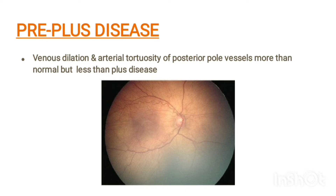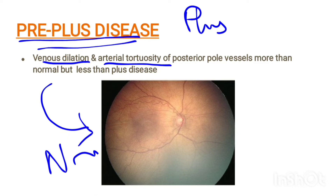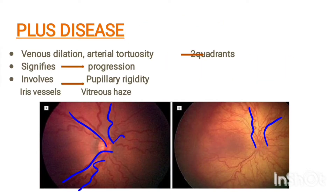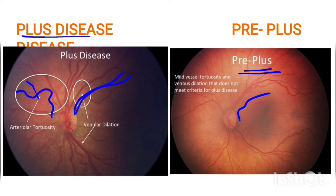Next we will see pre-plus disease. Pre-plus disease is a stage before plus disease, showing dilated veins and tortuous arteries, but not severe enough to qualify as plus disease. It is in between normal and plus disease. It shows mild tortuosity and mild dilatation. Comparing the images: in plus disease you see thick, severely tortuous and dilated veins, while pre-plus disease shows only mild changes and is not as dangerous.